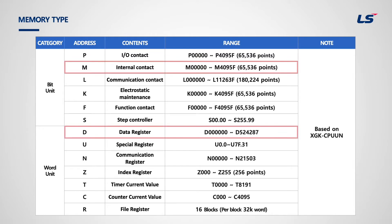Users mostly use M memory and D memory for internal memory. The difference between the two is that the last digit in M memory is a bit because M is a bit-based memory, whereas the last digit in D memory is a word because D is a word-based memory.